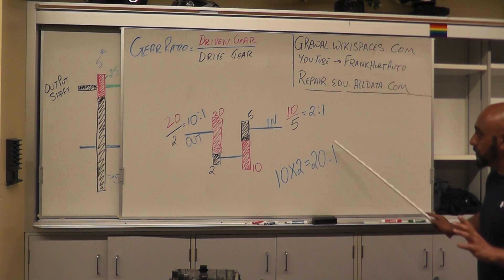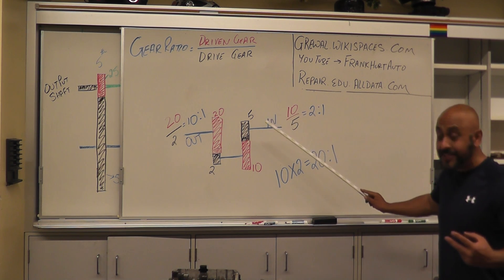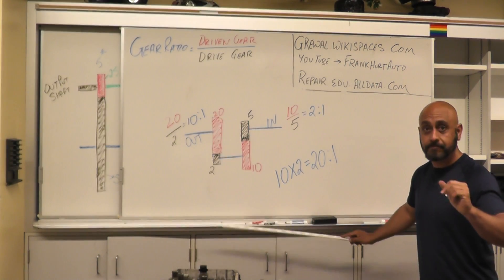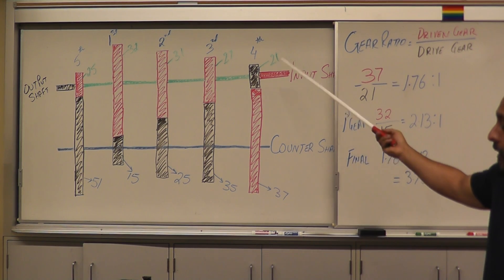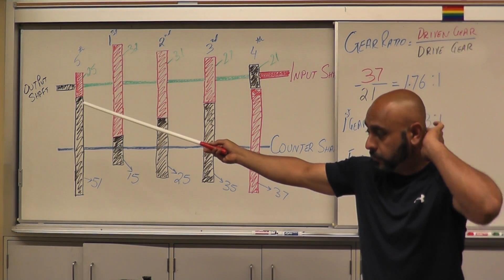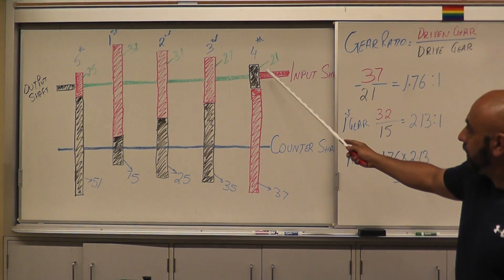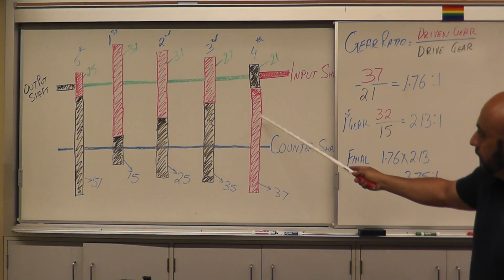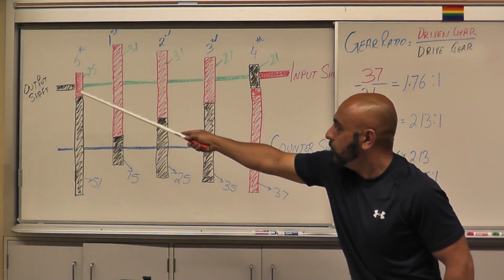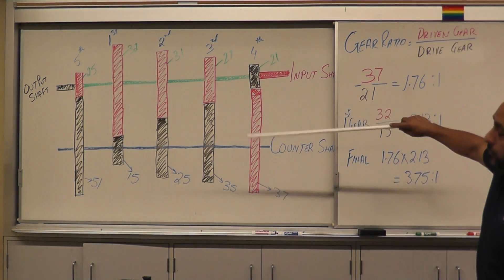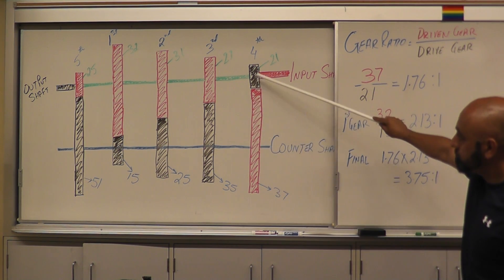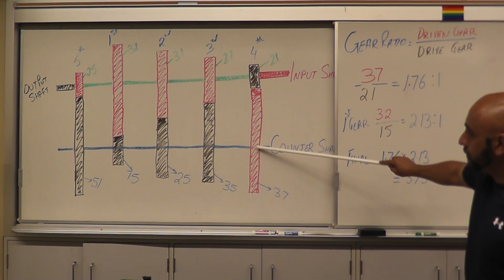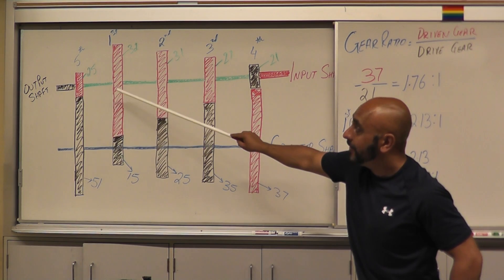So there's your input, there's your output — which means if this shaft is spinning 20 times, that one is only going to spin once. When we put this in perspective for our transmission, we have our engine on the input side and the wheels on the output shaft. For first gear, power comes in, down, up, and out. We have to calculate the two separate sets of gears and multiply them together — where this is the drive, there's your driven, and then these two sets where this becomes drive and that becomes driven.